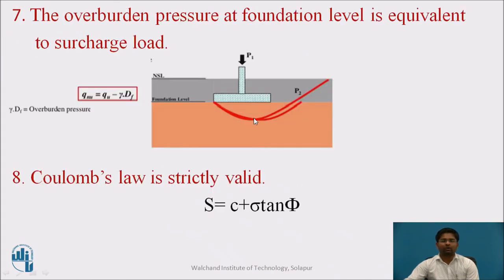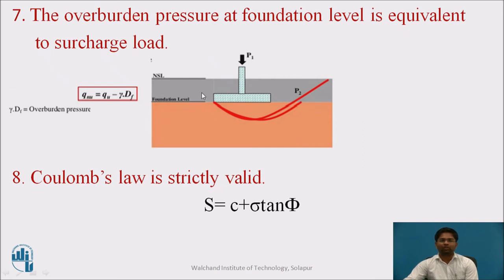The seventh assumption is that the overburden pressure at the footing level is equivalent to surcharge load. The footing carries load P1, and P2 is the overburden pressure. At the footing level, total P equals P1 plus P2, where P is the ultimate bearing capacity, P2 is the overburden pressure (gamma × Df), and P1 is the net ultimate bearing capacity. Therefore, net ultimate bearing capacity equals ultimate bearing capacity minus gamma times Df.